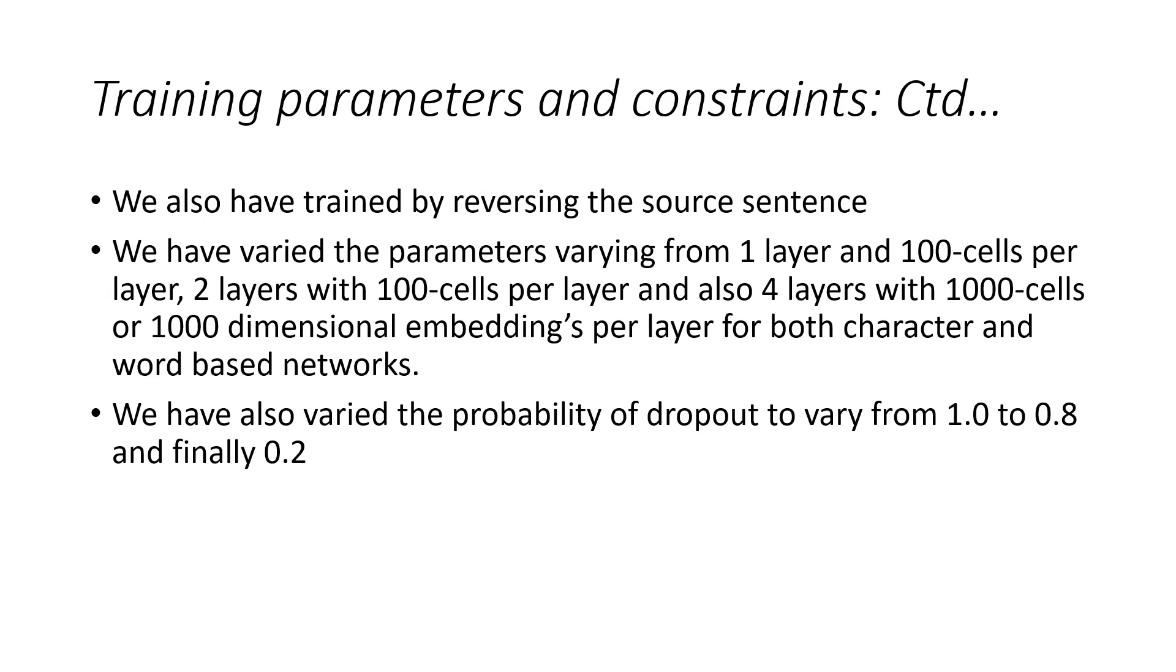When we started our training, we used to pass the sentence as the input in the straight manner. We have also trained by reversing the source sentence, which has given us more beautiful results. We have also varied the parameters varying from one layer model and 100 cell per layer model to four layers with 1000 cells or 1000 dimensional embedding per layer. These are common characteristics for both character and word based model.